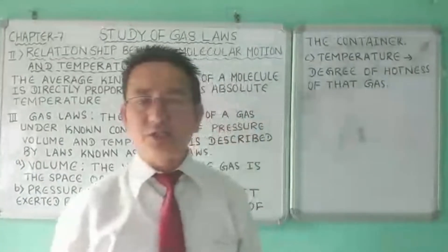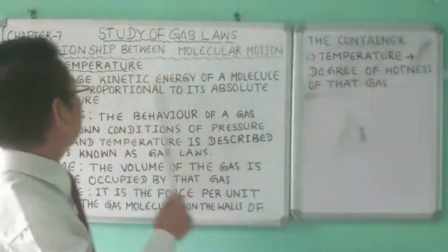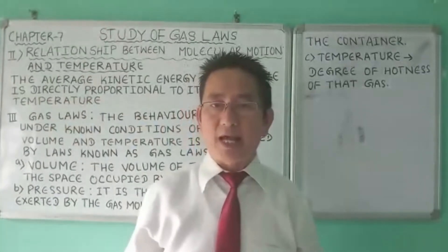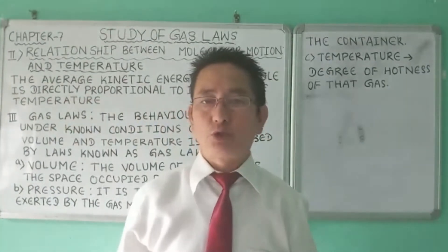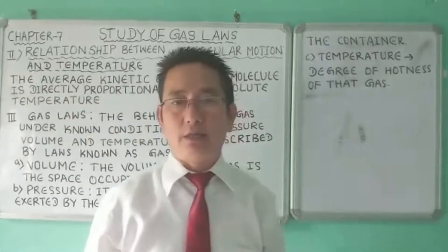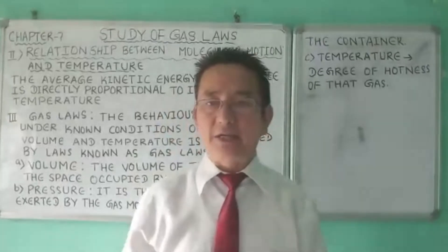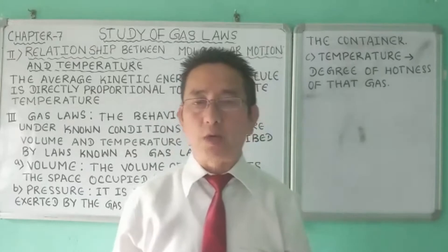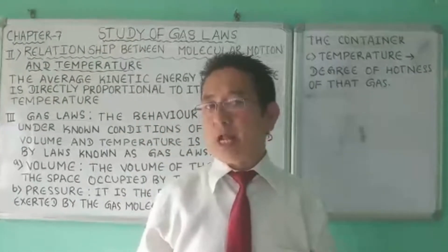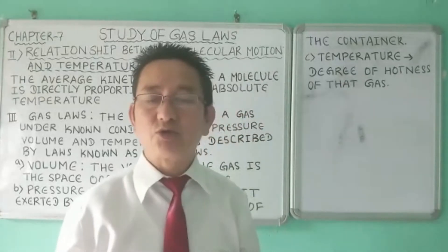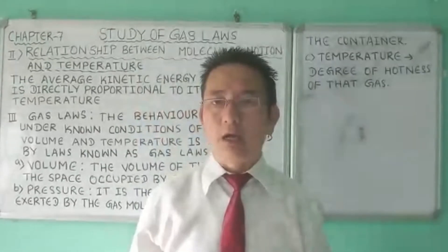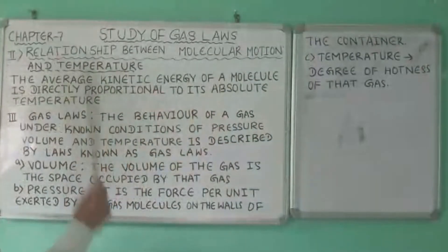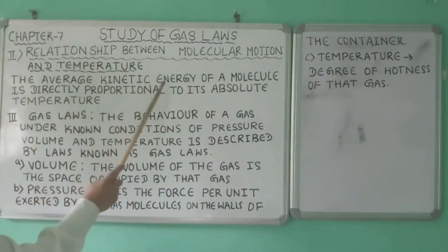Now we have the relationship between molecular motion and temperature. According to the kinetic model, the molecules of a gas are in constant random motion, so they possess kinetic energy. Kinetic energy is the energy possessed by a moving body, and since gas molecules are in constant random motion, they possess kinetic energy.